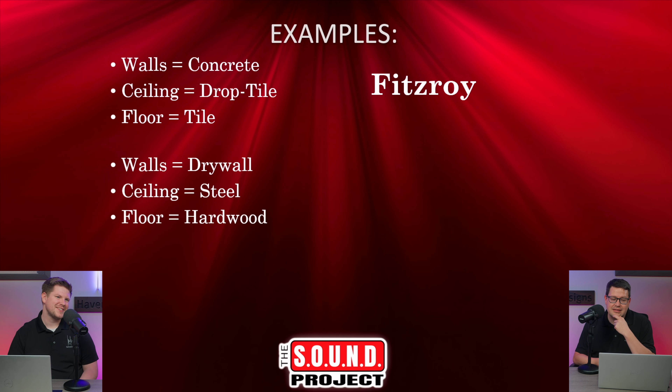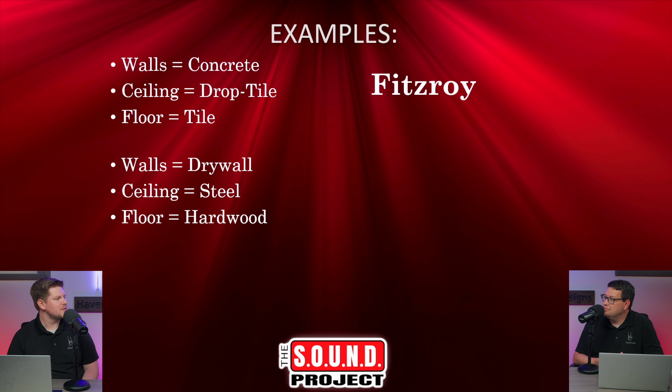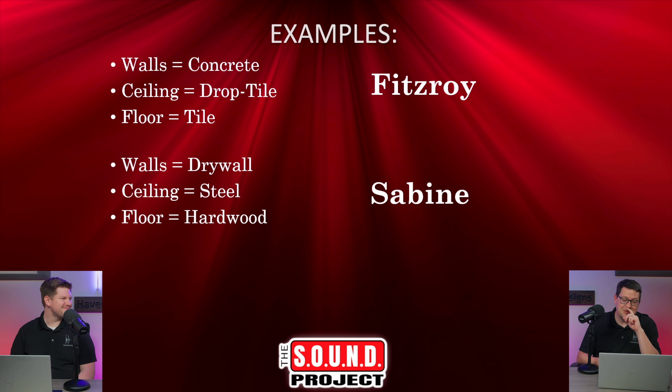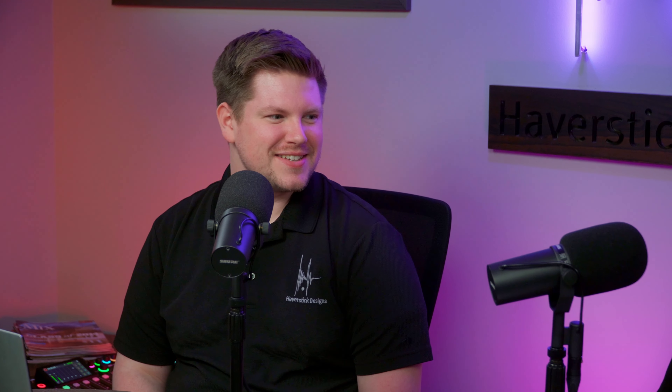Question two: the walls are drywall, the ceiling is steel, and the floor is hardwood. That would be Sabine — correct. The reason is that all those surfaces are reflective with very little absorption present, which is exactly the condition Sabine works well for.